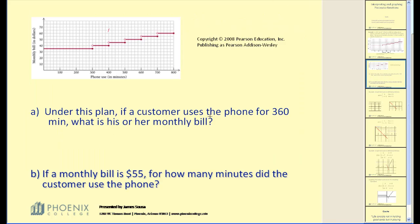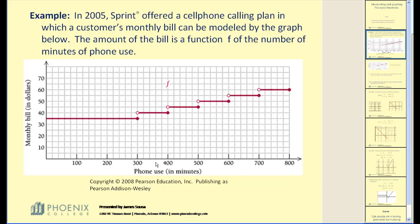Under this plan, if a customer uses the phone for 360 minutes, what is his or her monthly bill? I'll go back to the larger graph on the previous screen. Locate 360 on the x-axis, go straight to the graph. The graph is defined here where y equals 40, so the bill would be $40.